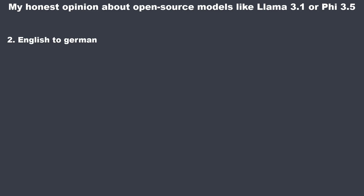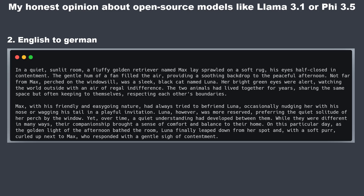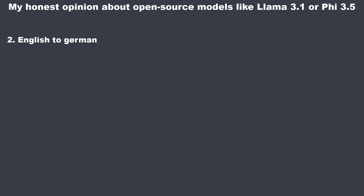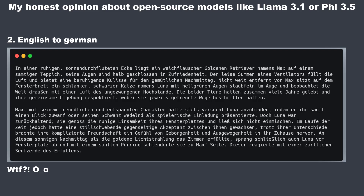The second part was about language understanding. I had GPT-4.0 generate a text about a cat and a dog in English and then wanted each model to translate it to German. I chose this language pair because there are many so-called false friends in German — words that sound like a correct translation of an English word but actually mean something totally different. PHY 3.5's translation is very hard to understand; some words don't exist in German or were left untranslated, like 'purring.' In general, the text reads like it was written by someone who learned German only half a year ago. The quality is very, very bad.